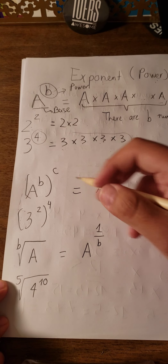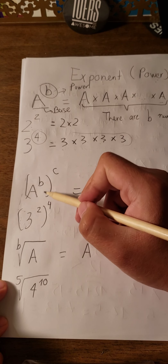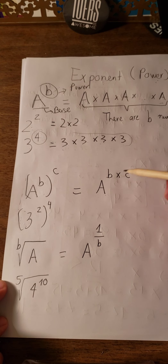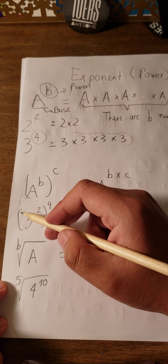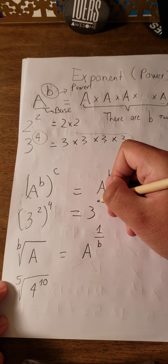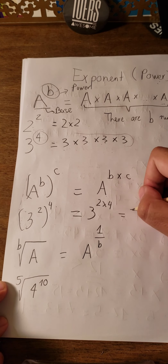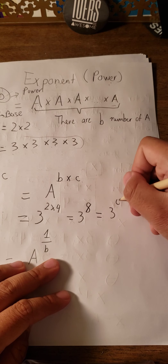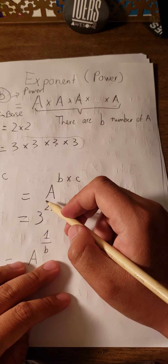The next formula: we have (a^P)^C, and the formula gives us a^(P×C). For example, we have (3^2)^4, which means we have 3 with 2 multiplied by 4, equal to 3^8. This is similar — be careful, because here we multiply P by C, not add them. They cannot be swapped.